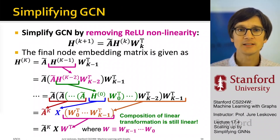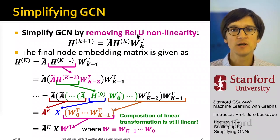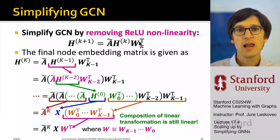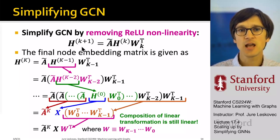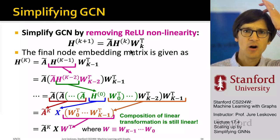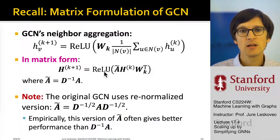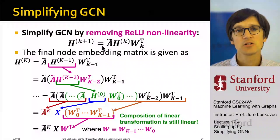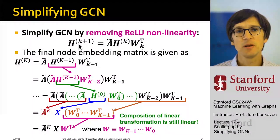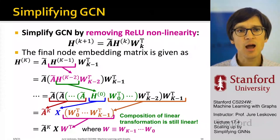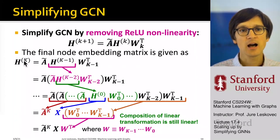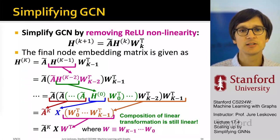Now let's go and simplify the GCN — let's remove this ReLU non-linearity. Let's say what would happen if the GCN were governed by the following equation. Going back, this is the equation with a non-linearity. Now we decided to drop the non-linearity. So here is our simplified GCN equation. Now let's unroll this recursion.